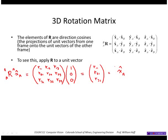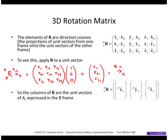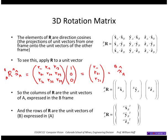So the columns of R of your rotation matrix are the unit vectors of A expressed in the B frame. And likewise, you can show that the rows of R are the unit vectors of B expressed in the A frame. So this is very helpful to check to see if your rotation matrix makes sense.